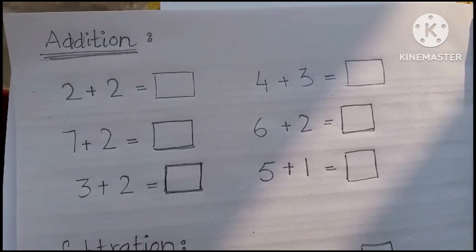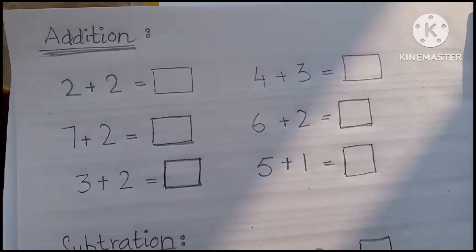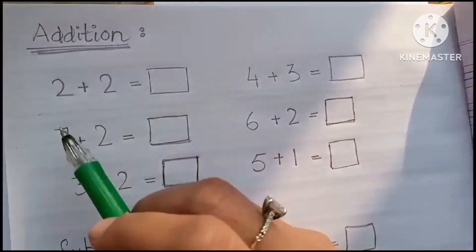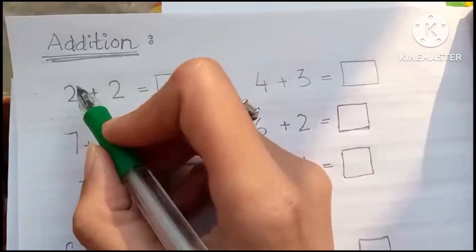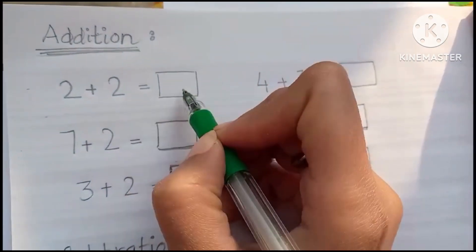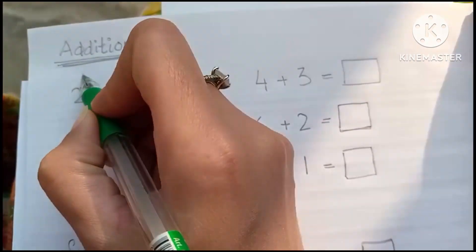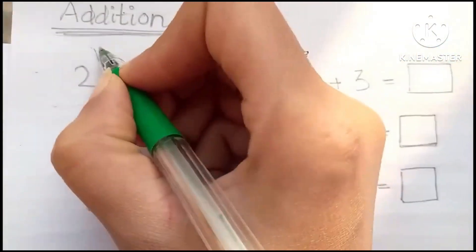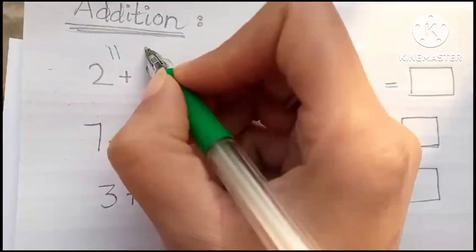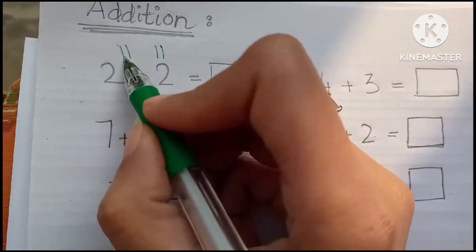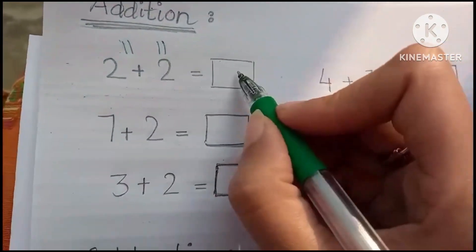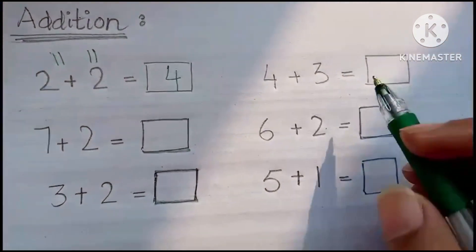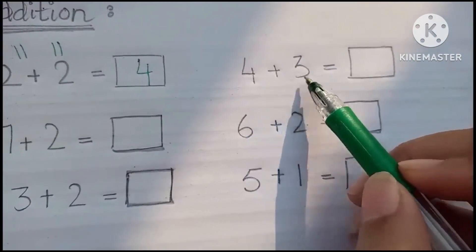Hello kids, how are you all today? We are going to learn about addition. 2 plus 2 is equal to — let me count this. 2 plus 2: 1, 2, 3, 4. 2 plus 2 is 4. 4 plus 3...